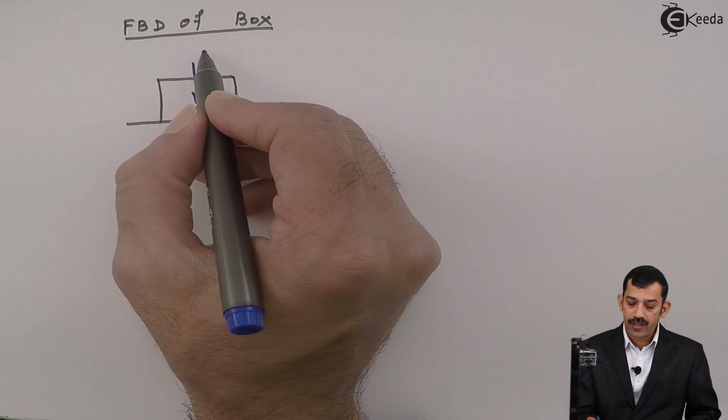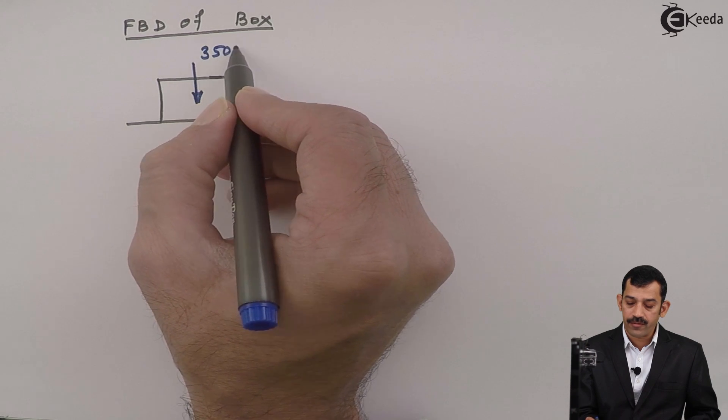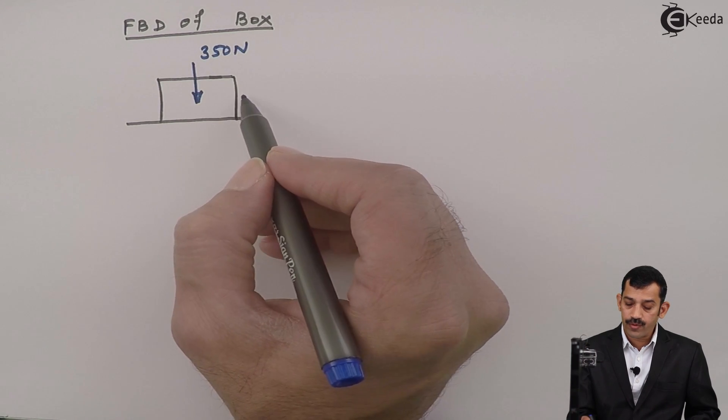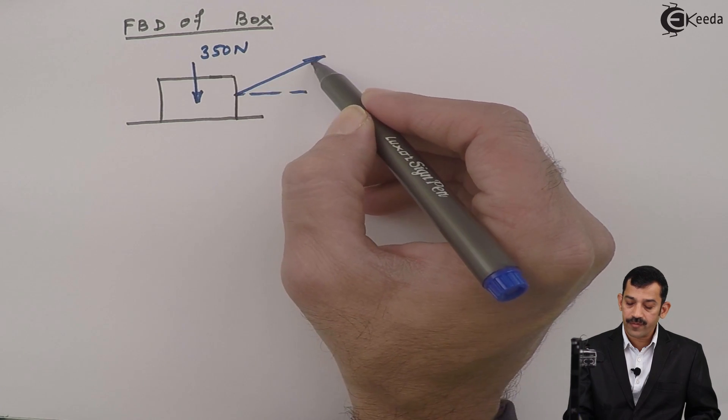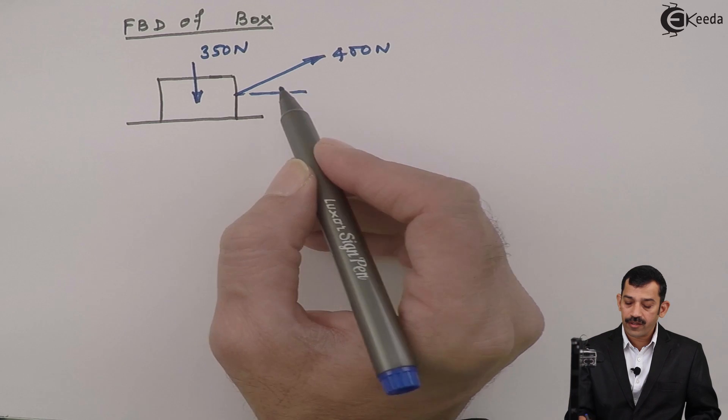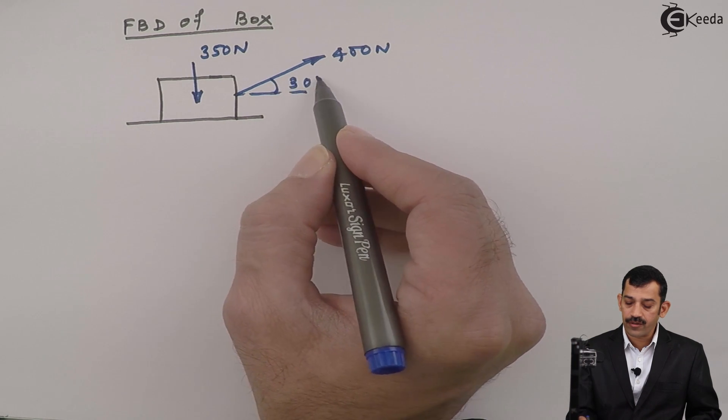Weight of box is given. How much is the weight of box? 350 Newton. What external force is acting here?